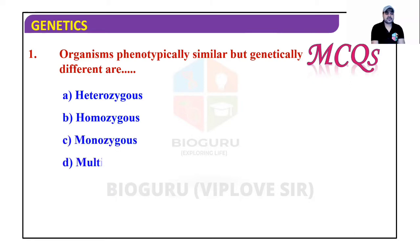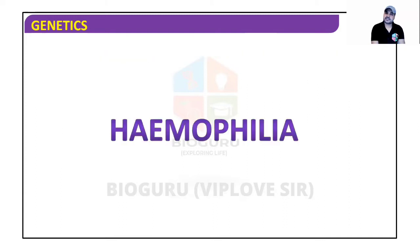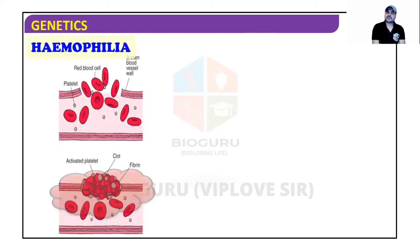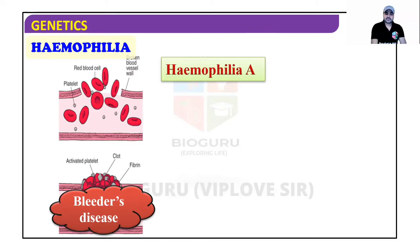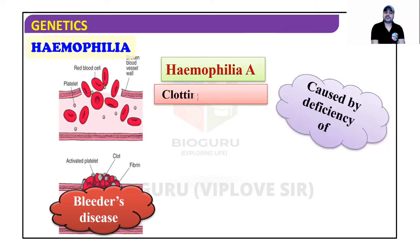Hemophilia is also called bleeders disease because blood does not clot, and royal disease because Queen Victoria had it and transferred it to her descendants. There are three types of hemophilia: hemophilia A, hemophilia B, and hemophilia C.